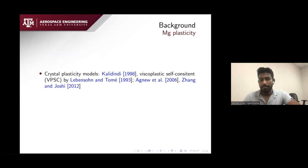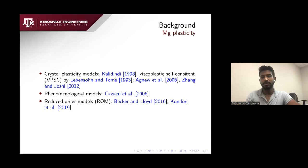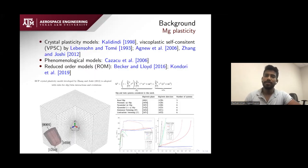A little bit of background on magnesium plasticity. There is a lot of work, starting with Calidin's crystal plasticity model and the famous VPAC models by Levenson and Atnu, and the more recent crystal plasticity model by Zang and Joshi who improved Calidin's model for better hardening, well calibrated for magnesium alloys. There have also been interesting developments of phenomenological models by Kazakou and reduced order models by Becker and Kondari.